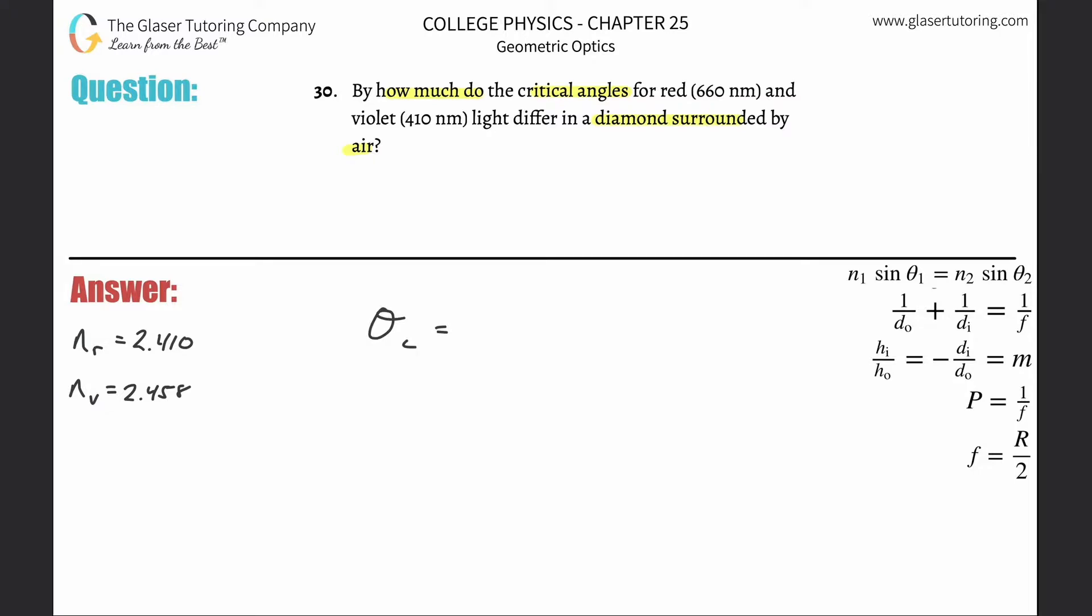The critical angle formula is the inverse sine of n2 over n1. n2 is the index of refraction for the refracted ray, and n1 is the index of refraction for the incident ray.